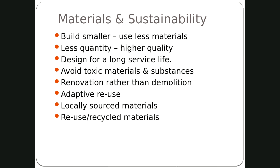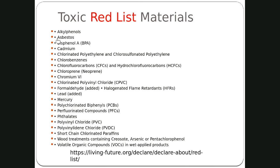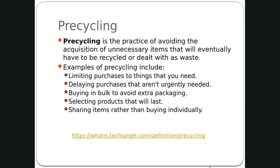Use locally sourced materials. Recycle or reuse materials wherever you can. Avoid toxic materials — both for your health, for the environment, and for the health of people who will live or work in that space. There is a toxic red list that includes asbestos. Think carefully about what you specify and what's behind that. Different companies rate materials. Pre-cycling is the practice of avoiding acquisition of unnecessary items — limiting purchases to what you really need or delaying non-urgent purchases.